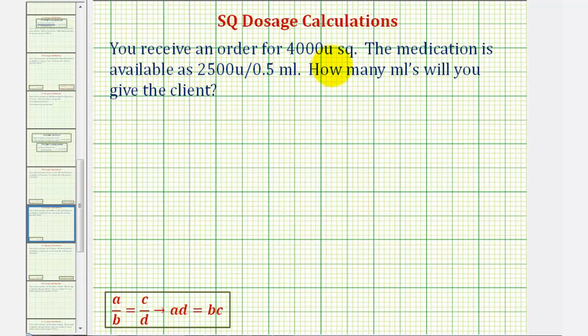You receive an order for 4,000 units SQ. The medication is available as 2,500 units per 0.5 milliliters. How many milliliters will you give the client?